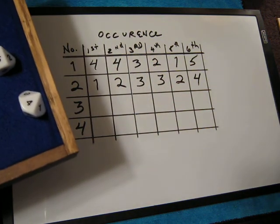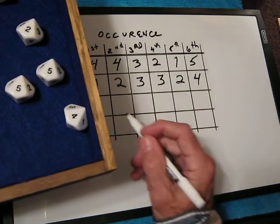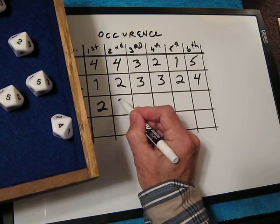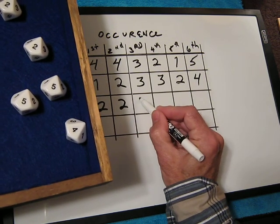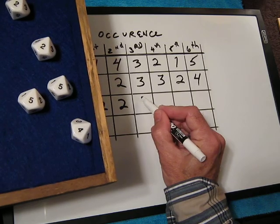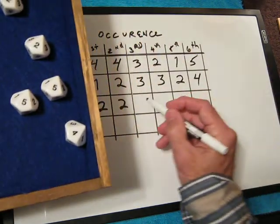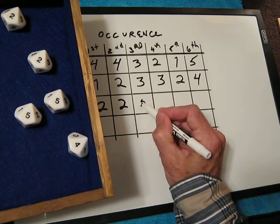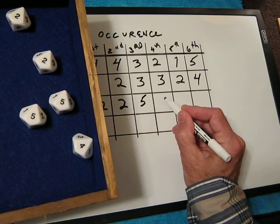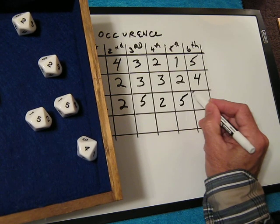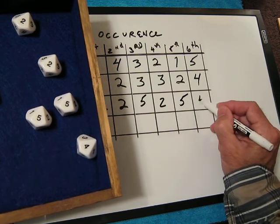So we can write this down for number three. Two, two, I'm sorry, it's two, two, and then the closest one limit would be a five, so two, two, five, two, five, one, four. Okay, so there we go.